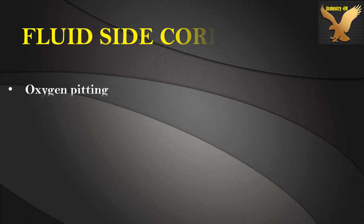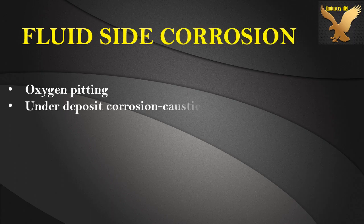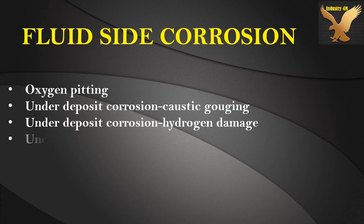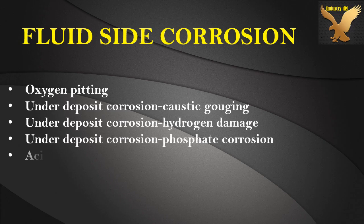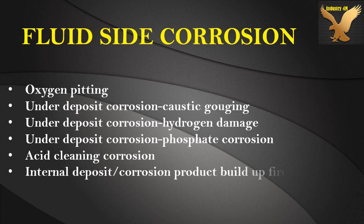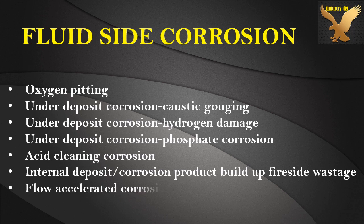Fluid side corrosion: Oxygen pitting. Under deposit corrosion — Caustic gouging. Under deposit corrosion — Hydrogen damage. Under deposit corrosion — Phosphate corrosion. Acid cleaning corrosion. Internal deposit or corrosion product build-up. Flow accelerated corrosion.